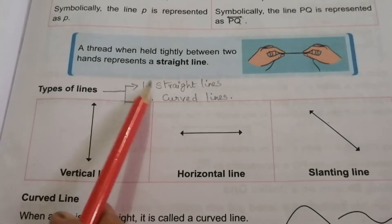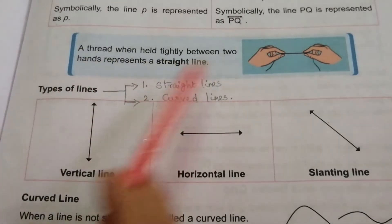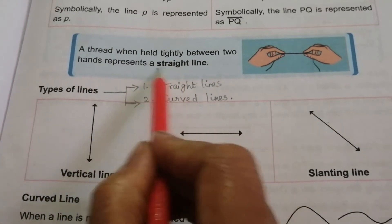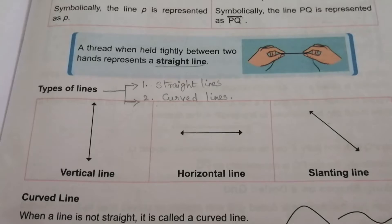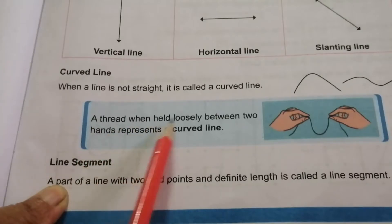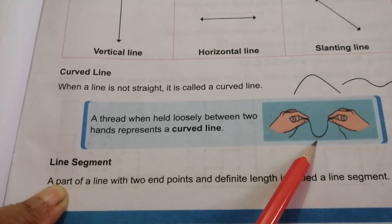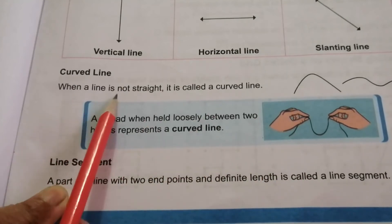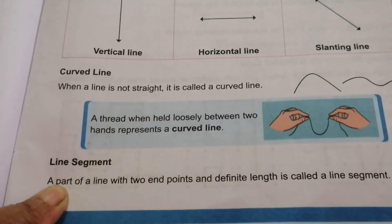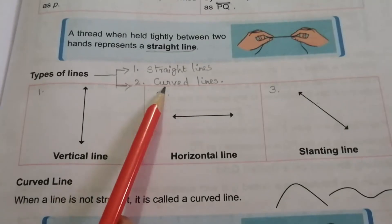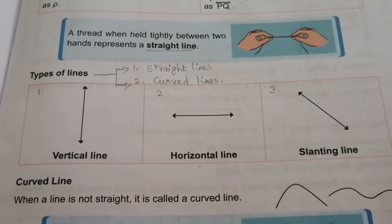Lines can be divided into two types: straight lines and curved lines. A thread held tightly between two hands represents a straight line, while a thread held loosely represents a curved line. A straight line is further divided into three types: vertical line, horizontal line, and slanting line.